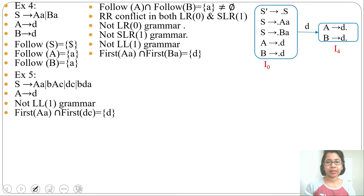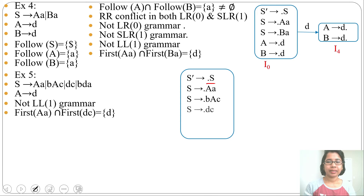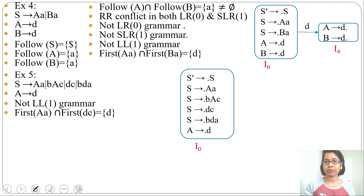To check LR0 and SLR1, we need to create the partial SLR automata. The initial state will contain the augmented production S' → •S. We need to add closure: S → •aAbA, S → •cd, S → •dcA, S → •bdA. There is a dot before 'a', so we add A → •d. We assign state name i0. State i0 contains no reduction, so there is no chance of conflict.